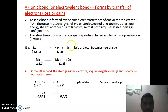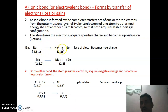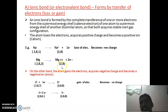The atom that loses electrons acquires a positive charge and becomes a positive ion, known as a cation, and this is known as positive electrovalency. For example, sodium has atomic number 11 and electronic configuration 2,8,1 — its outermost orbit has one electron, which is easily lost to form Na⁺ with stable configuration 2,8. Magnesium has atomic number 12 and electronic configuration 2,8,2 — its two outermost electrons are lost to form Mg²⁺ with stable configuration 2,8.